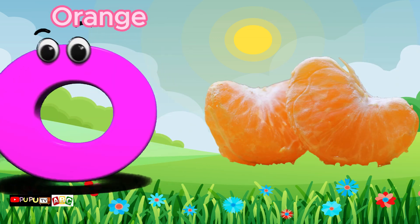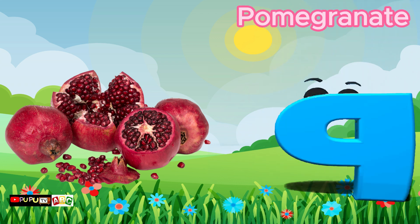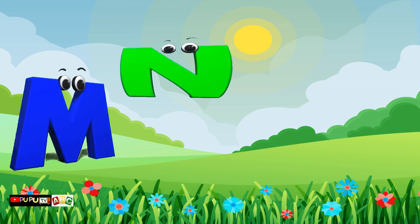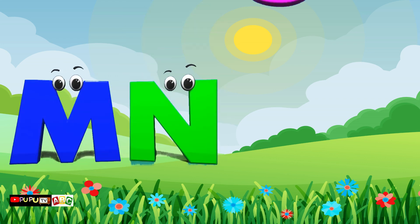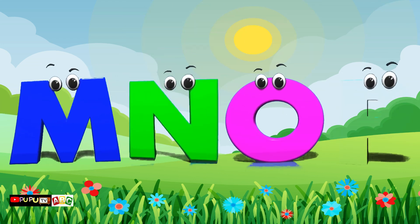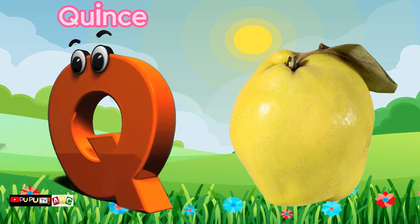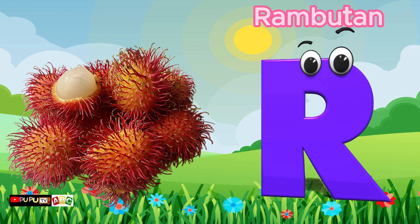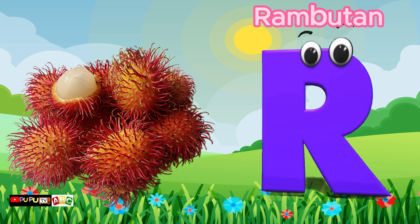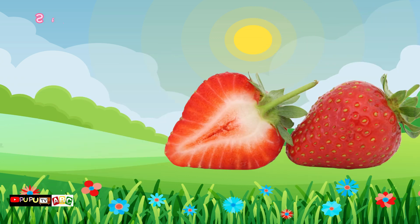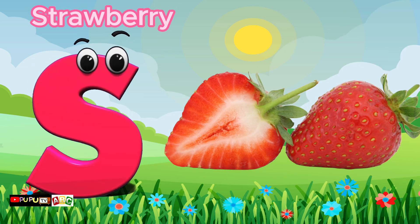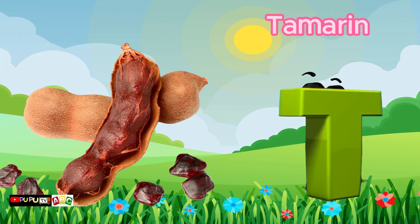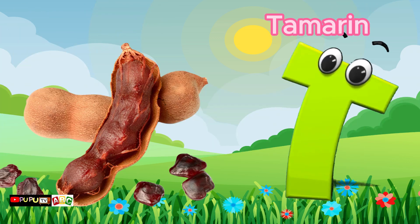P is for Pomegranate. Q is for Quince. R is for Rambutan. S is for Strawberry. T is for Tamarind. Tamarind.